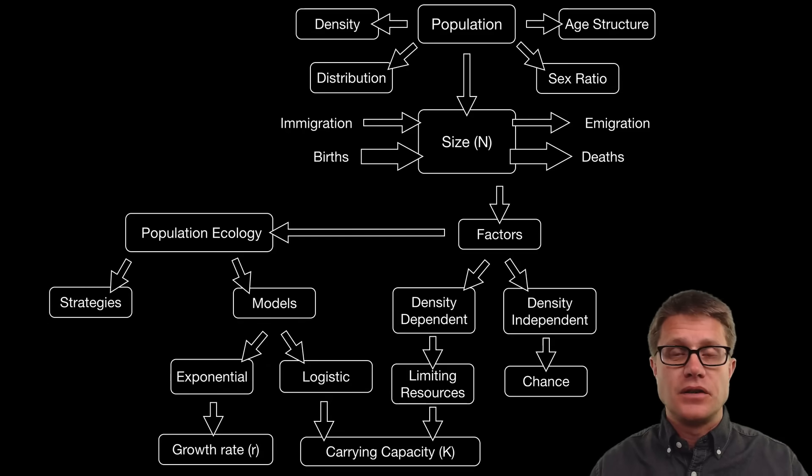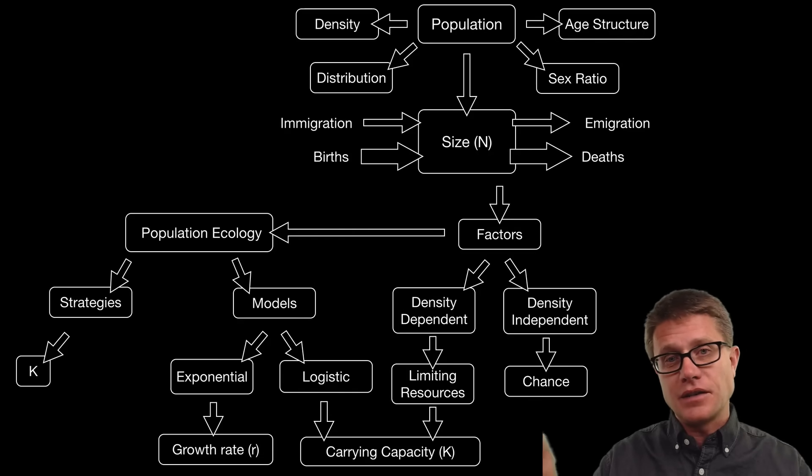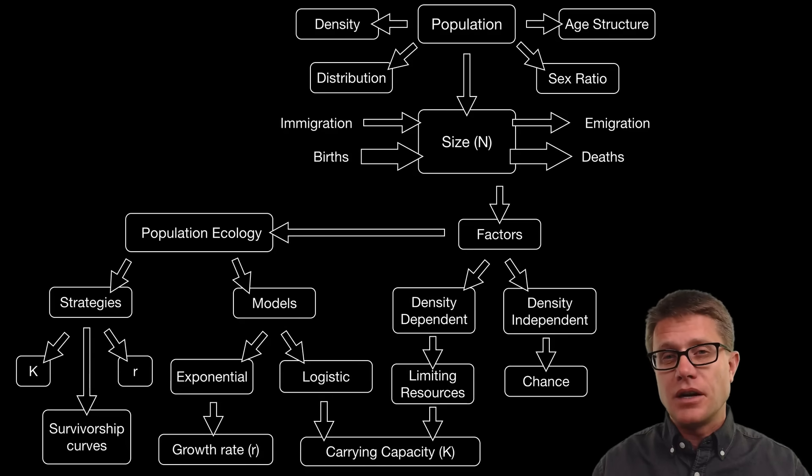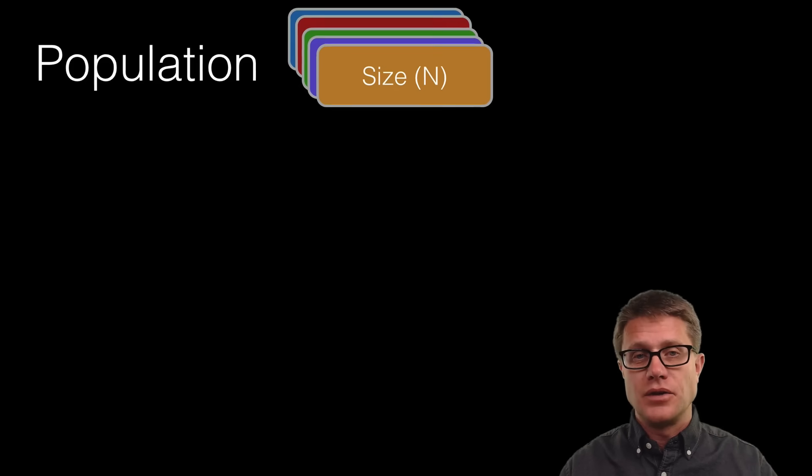Scientists also study strategies that species have. Some are what are called K-selected. That means their population size will increase until it gradually hits a carrying capacity. And those who live more of a boom or bust cycle are r-selected. And we can look at how long individuals survive and that tells us a little bit about which strategy they are using.